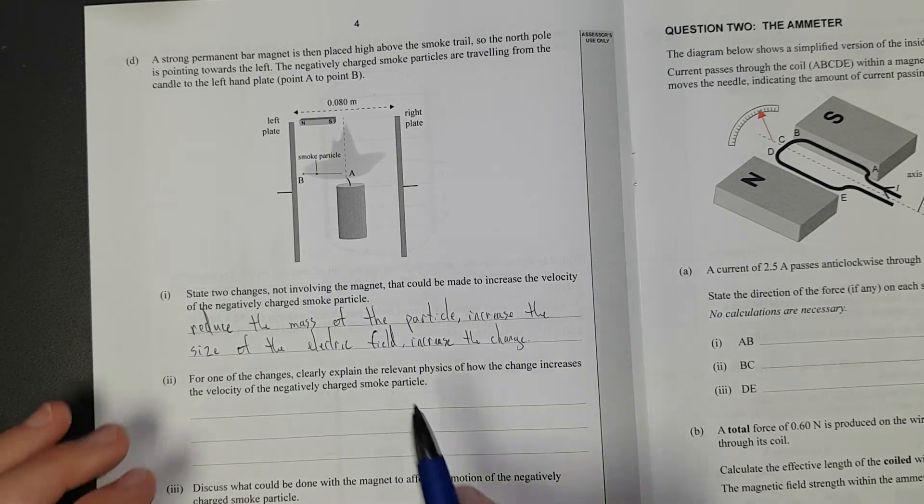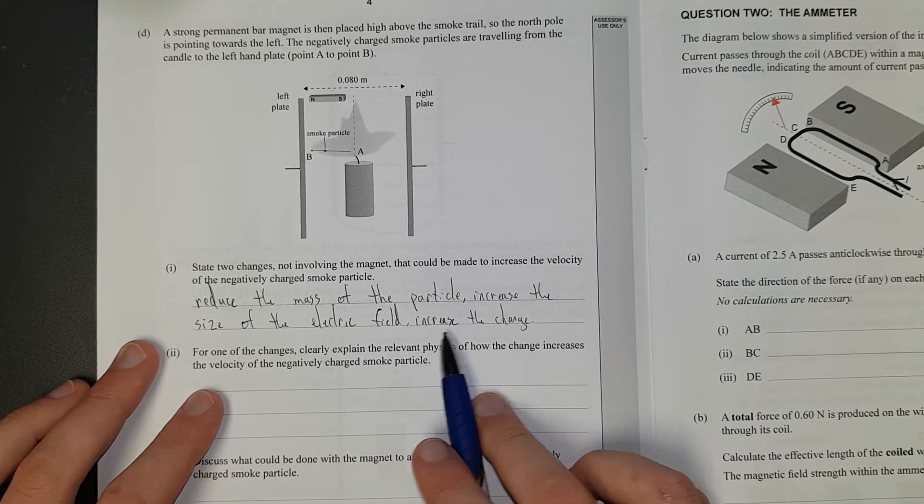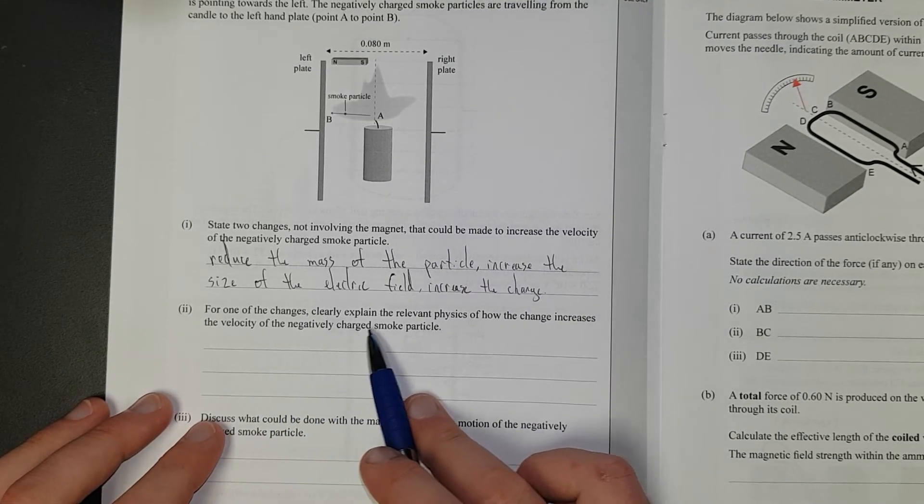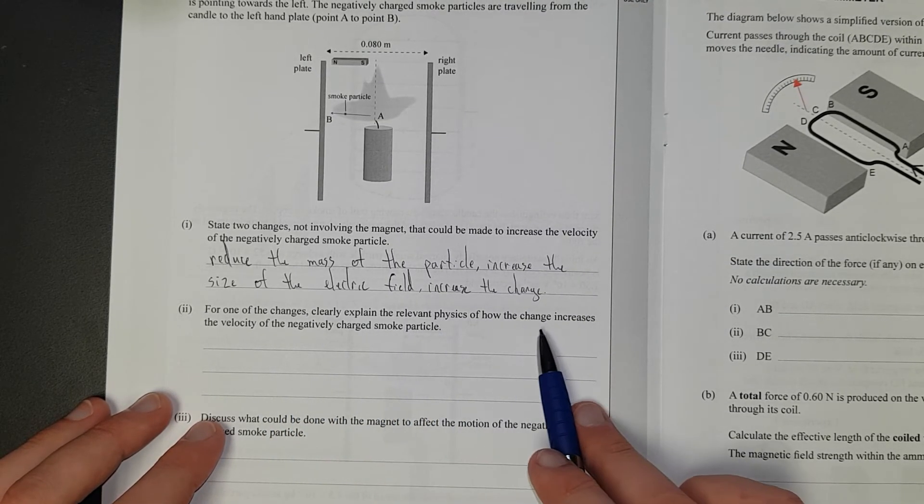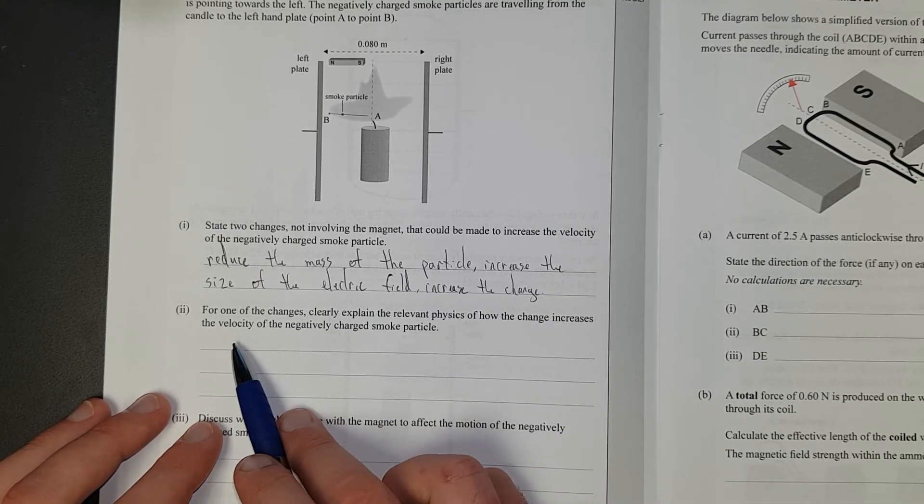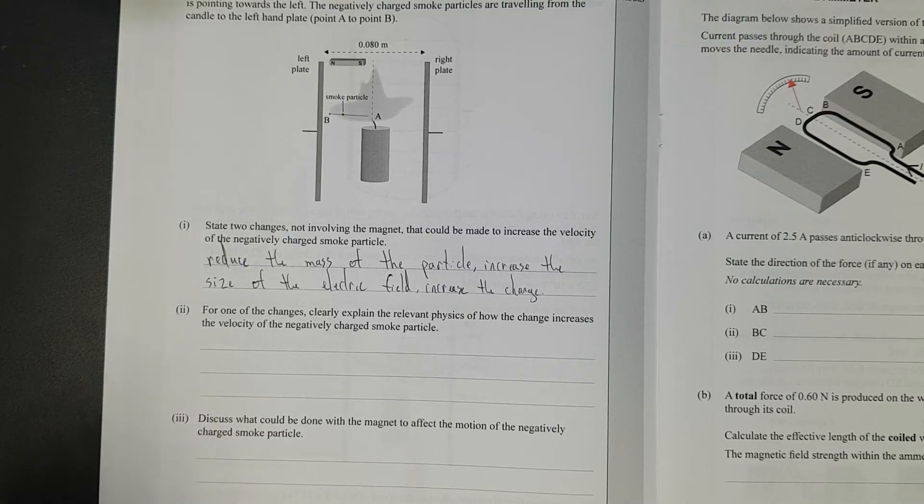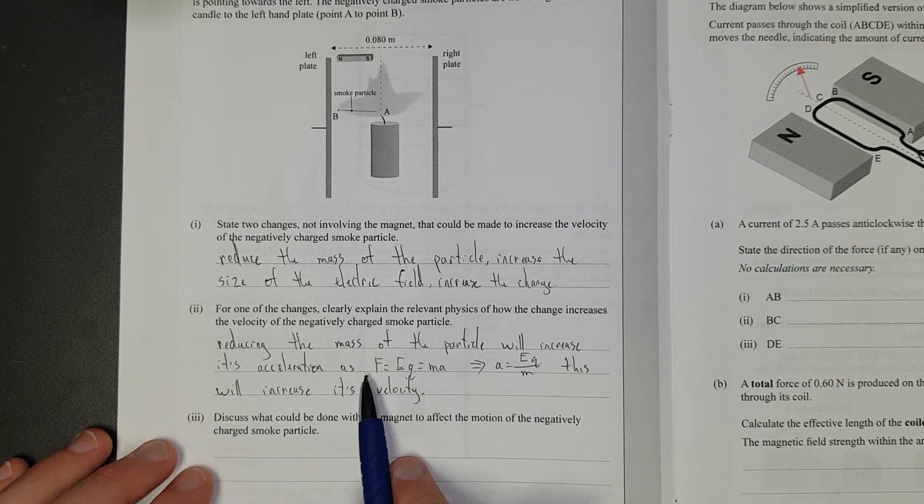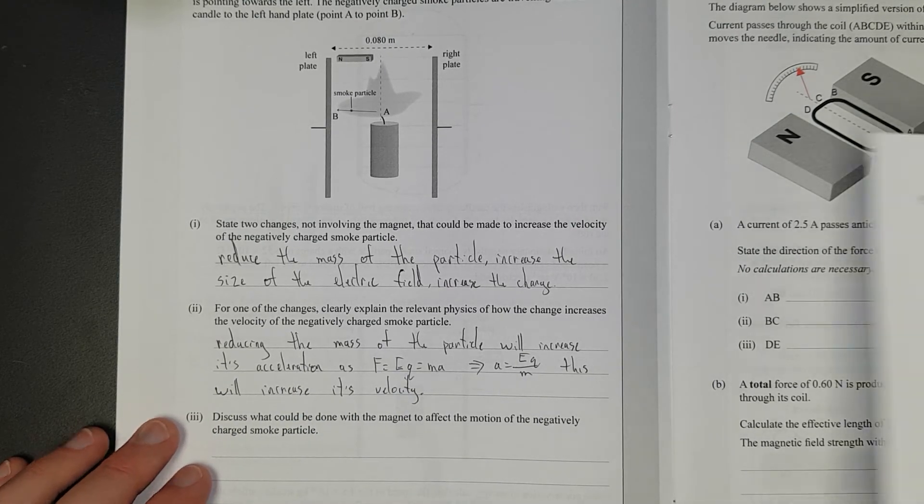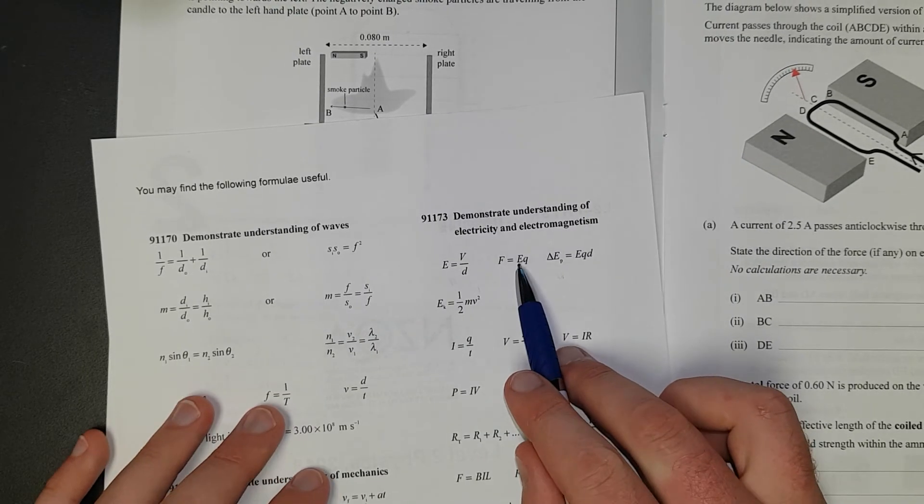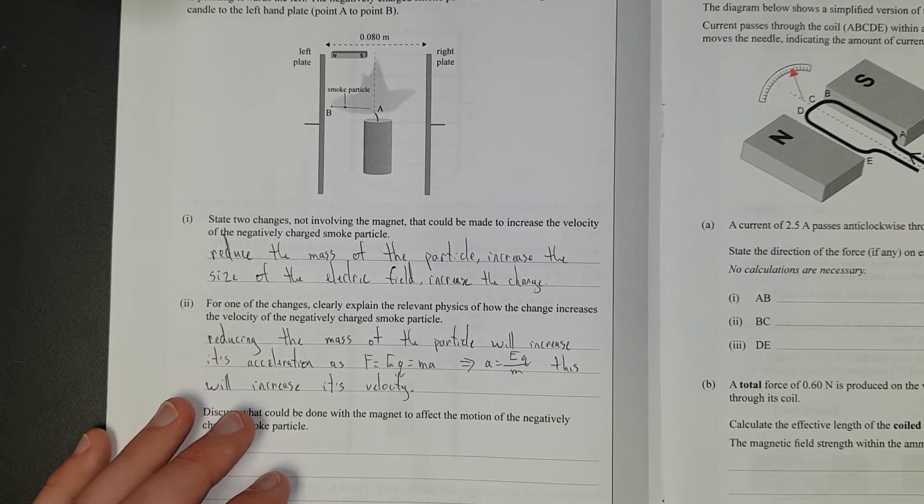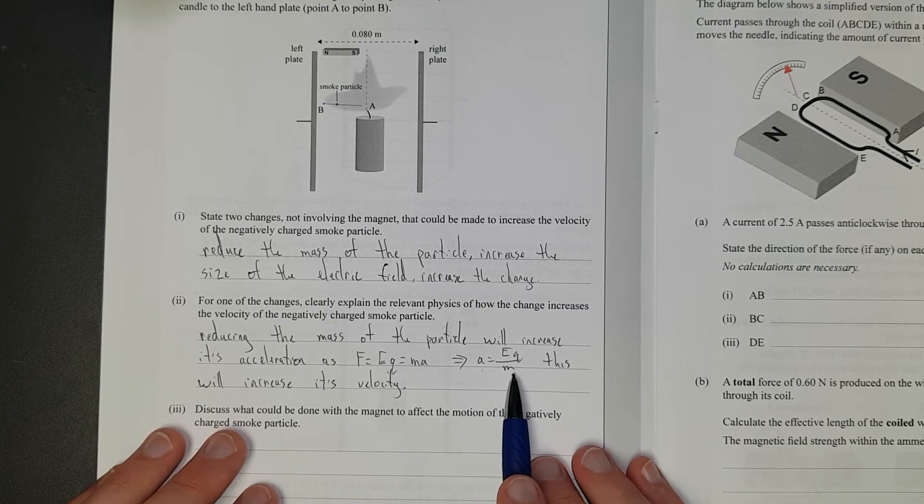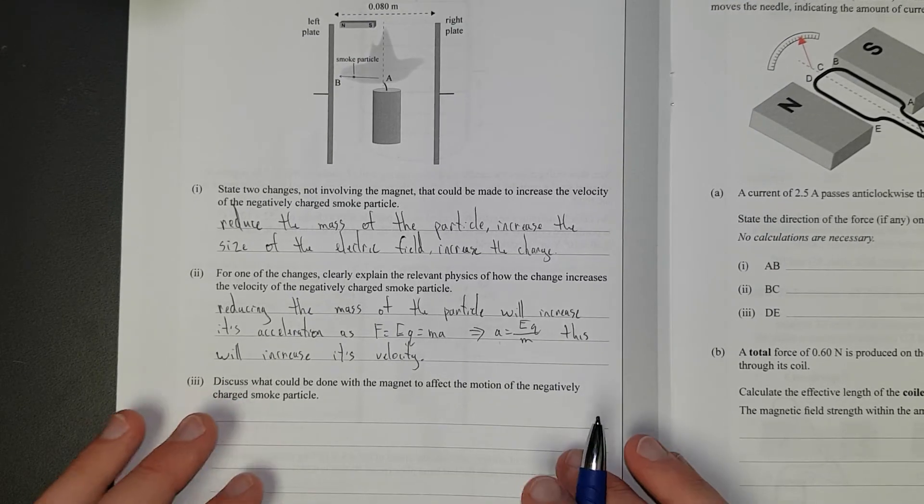So, I've said, reduce the mass of the particle, increase the size of the electric field, and I've added an extra one, increase the charge. They're like the three things you can do. For one of the changes, explain how change increases the velocity of the negatively charged smoke particle. Again, I'll just discuss once I'm done. As I've said, reducing the mass of the particle will increase acceleration. Force is equal to EQ times MA. So, EQ, that's the electric field, times the charge. And then MA, that's the mass times acceleration, Newton's second law. Rearranging, the acceleration is equal to the electric field times the charge divided by the mass. This will increase its velocity. Sweet.